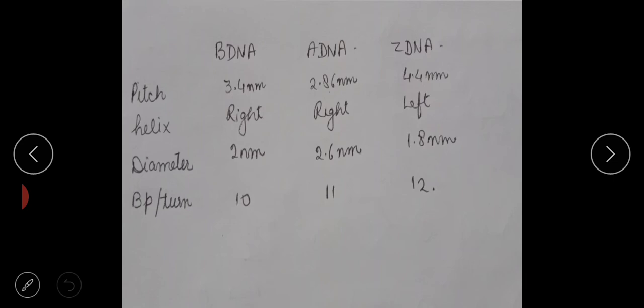Comparing the three DNA forms: the pitch of B-DNA is 3.4 nm, A-DNA is 2.86 nm, and Z-DNA is 4.4 nm — so Z-DNA has a longer turn. B-DNA and A-DNA are both right-handed helices, but Z-DNA is left-handed. The diameter of B-DNA is 2 nm, A-DNA is 2.6 nm, and Z-DNA is 1.8 nm — Z-DNA has the smallest diameter. Base pairs per turn: B-DNA has 10, A-DNA has 11, and Z-DNA has 12.